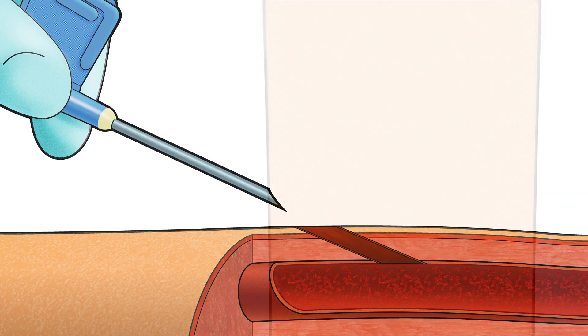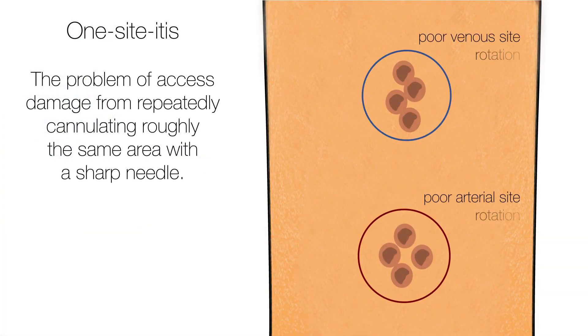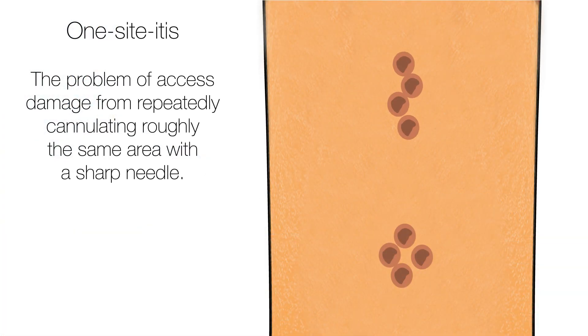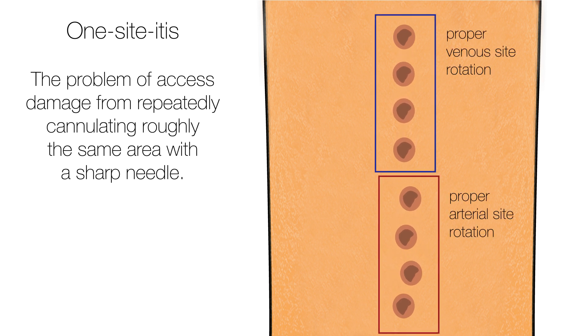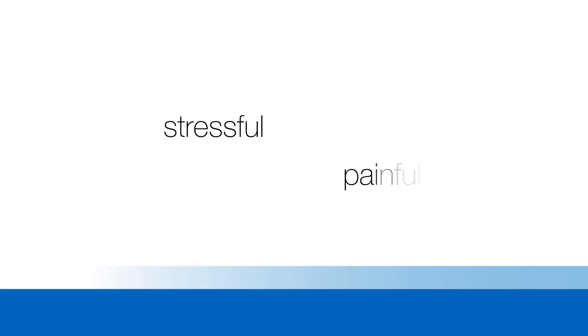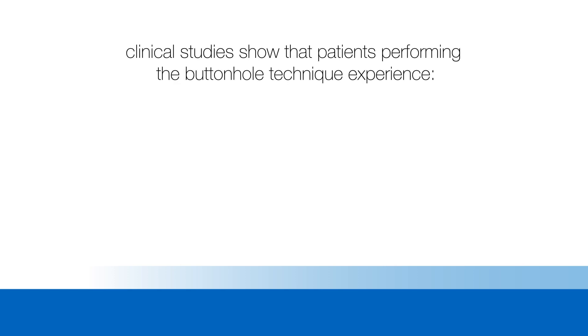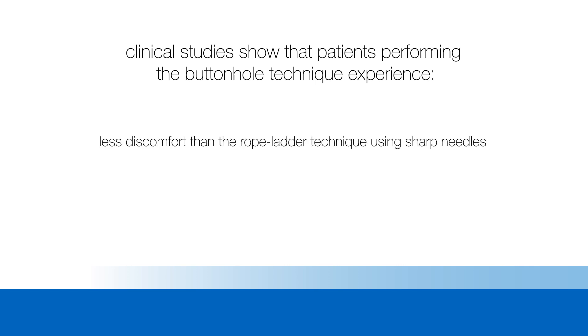A constant site is different from one-site-itis, the problem of access damage that can occur from repeatedly cannulating roughly the same area with a sharp needle. One-site-itis can cause the vessel wall to weaken, which may lead to the development of aneurysms, skin breakdown, infection, or loss of access. For many patients, cannulation can be stressful and painful. However, clinical studies show that many patients performing the buttonhole technique experience less discomfort than the rope ladder technique using sharp needles, and fewer missed sticks.